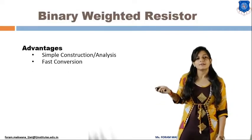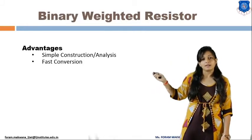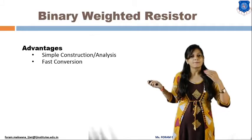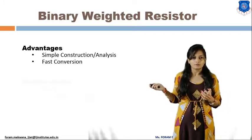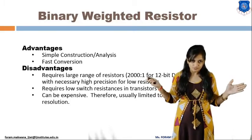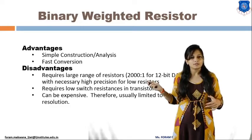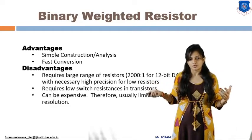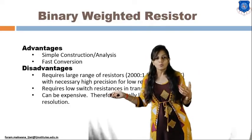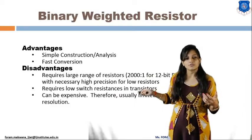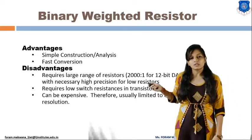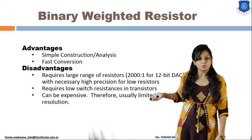The advantages of the binary weighted resistor DAC are simple construction and faster conversion from analog. The disadvantages are that it requires a large range of resistors with high precision, which can be expensive. It also requires low switch resistance in the transistor, and as cost increases, resolution is limited to up to 8 bits.